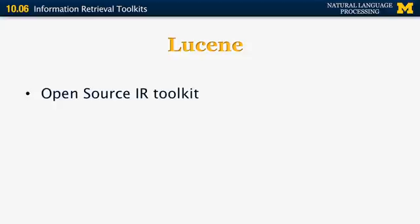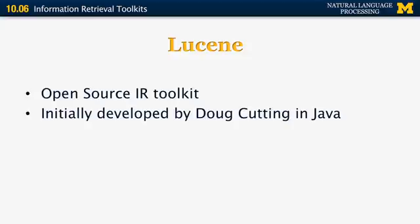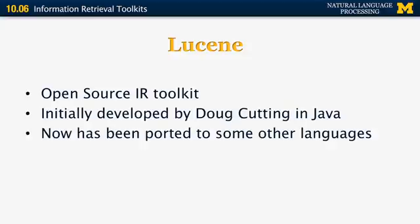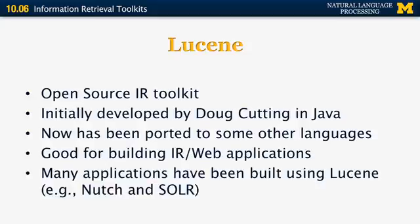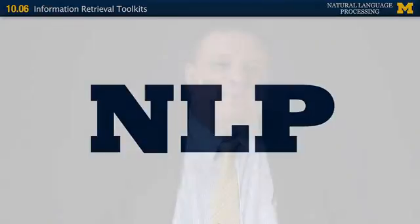Lucene is an open source information retrieval toolkit written in Java, distributed by the Apache Foundation and ported to multiple languages. It's very good for building practical IR and web applications from scratch. Many applications have been built on top of Lucene, for example Nutch and Solr. This concludes the section on information retrieval.